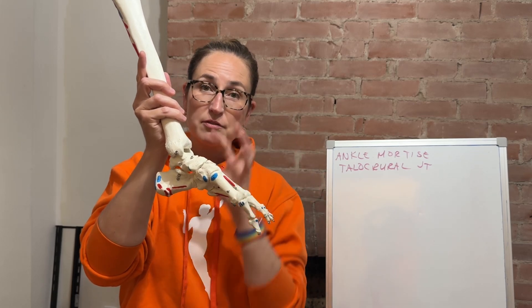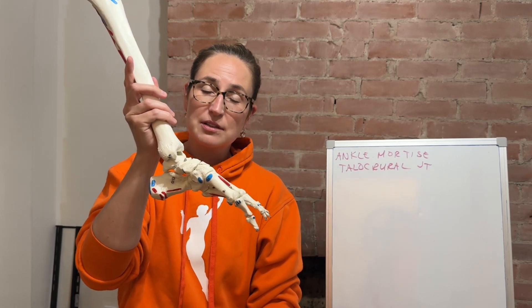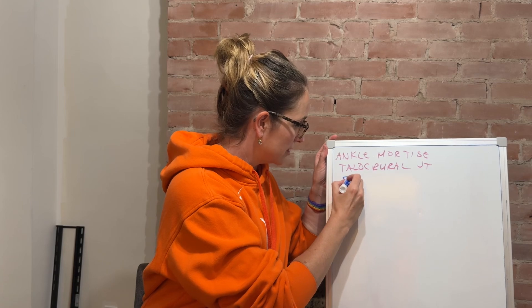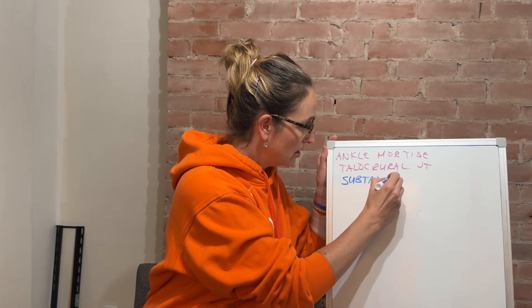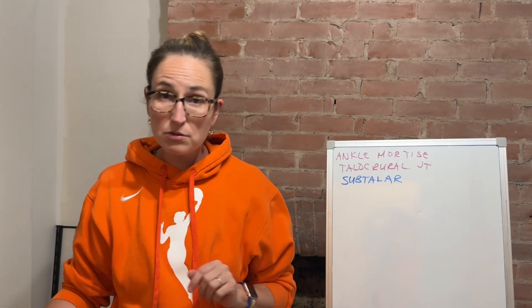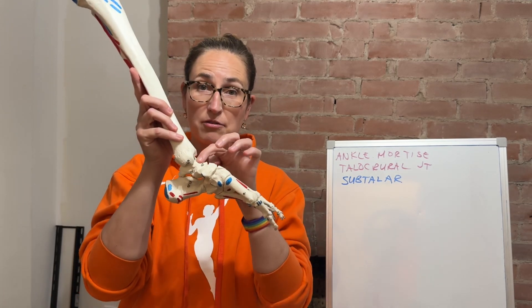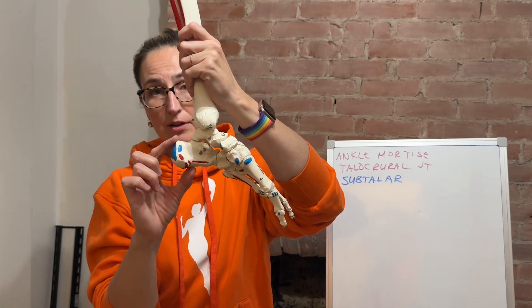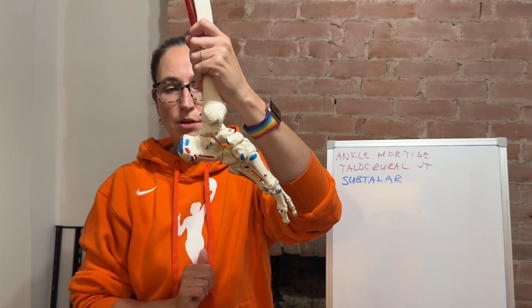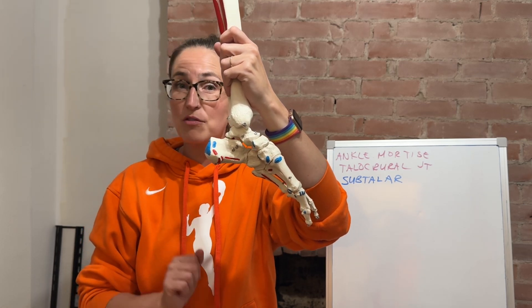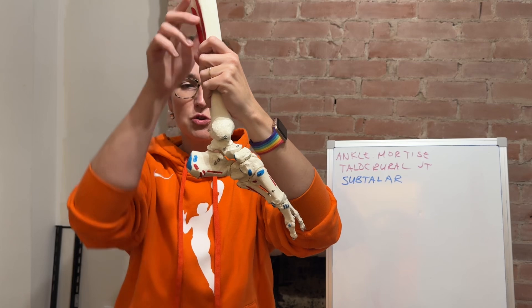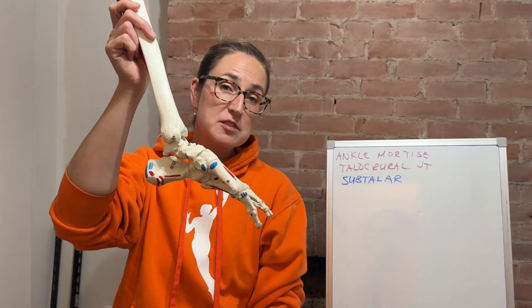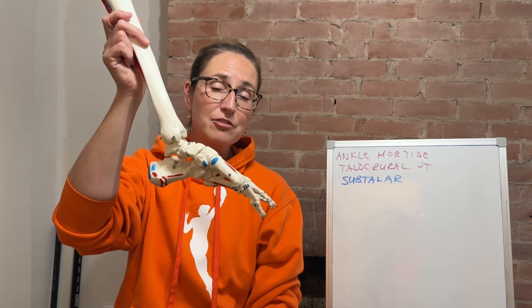The other joint that often gets wrapped into the ankle joint is called the subtalar joint. Sub means below, and tailor makes reference to the talus. This joint is made up between the talus and the calcaneus — articulation just being a fancy word for one bone touching another bone, which is what a joint is. The movement permitted at the subtalar joint is inversion and eversion.